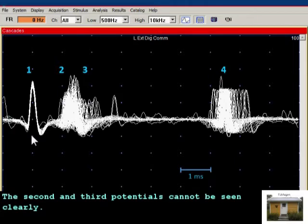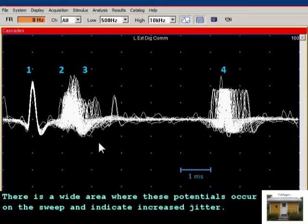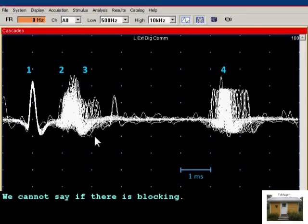The second and third potentials cannot be seen clearly. There is a wide area where these potentials occur on the sweep and indicate increased jitter. We cannot say if there is blocking.